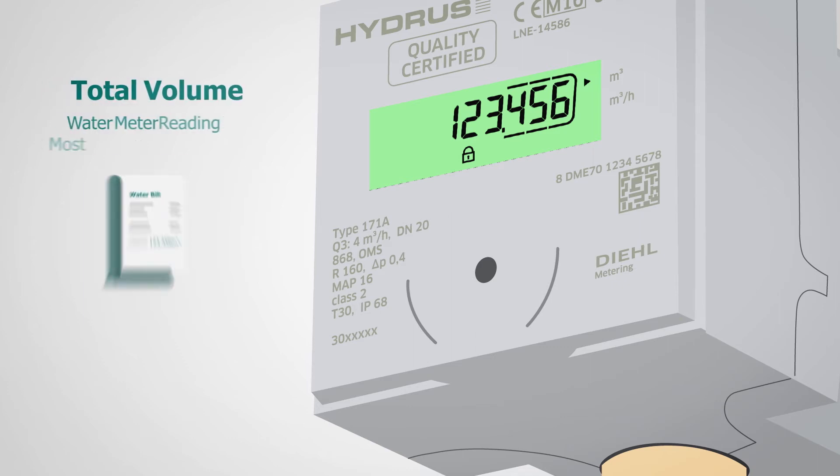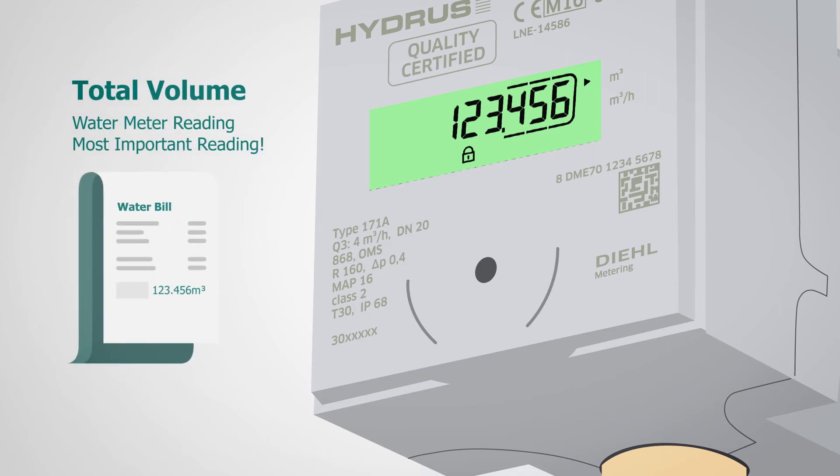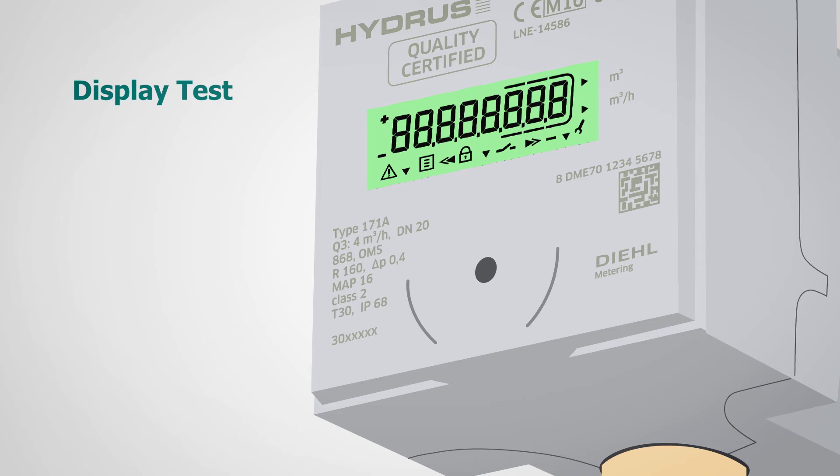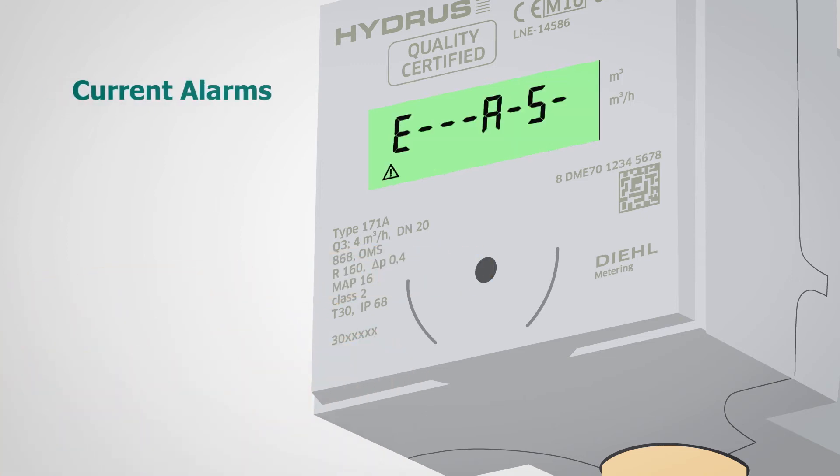The current meter reading, the total volume, always recognizable by the little padlock and the arrow pointing to cubic meters, display test, display on and display off, current alarm notifications, current flow of water. The arrow is pointing now to cubic meters per hour.